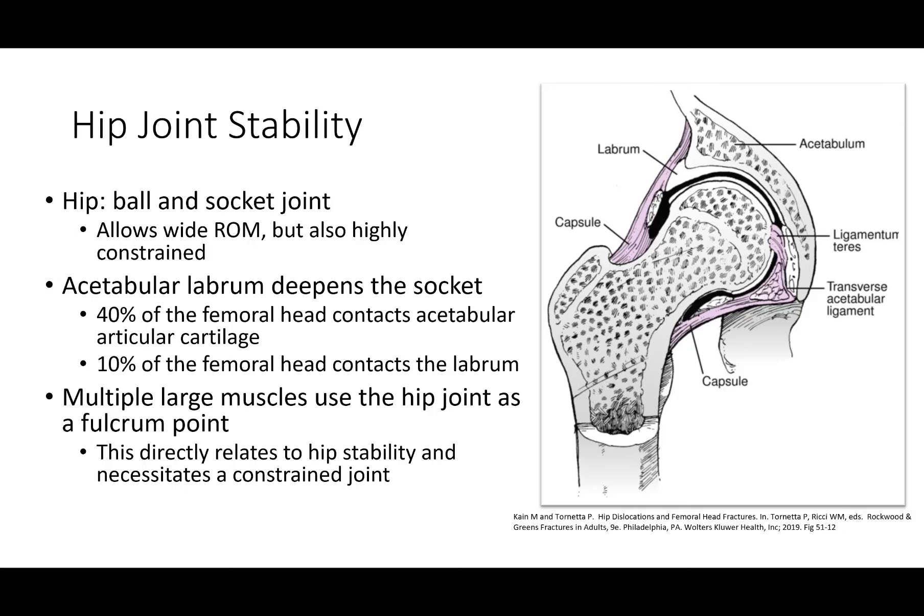The hip is a ball and socket joint that makes it somewhat stable. It allows a reasonable range of motion, but it's fairly constrained compared to the shoulder. The acetabular labrum helps to deepen the socket. 40% of the femoral head contacts the acetabular articular cartilage, which is horseshoe-shaped, and 10% of the femoral head contacts the labrum. Multiple large muscles use the hip joint as a fulcrum point, and this directly relates to hip stability and necessitates a constrained joint.